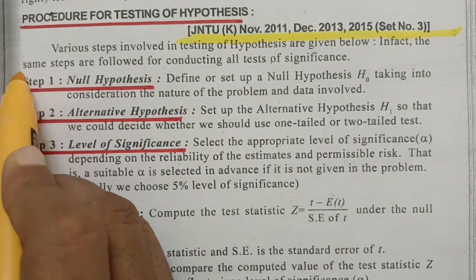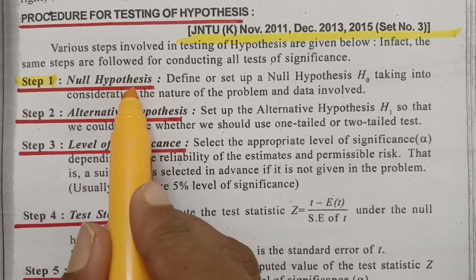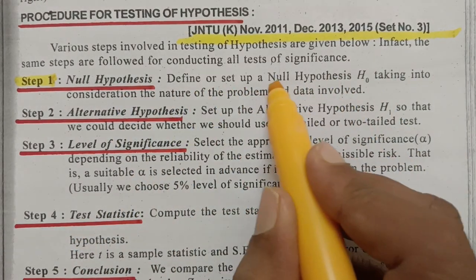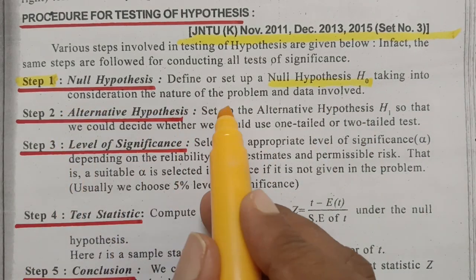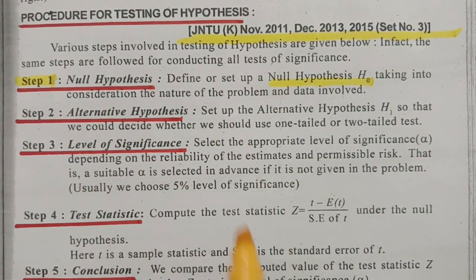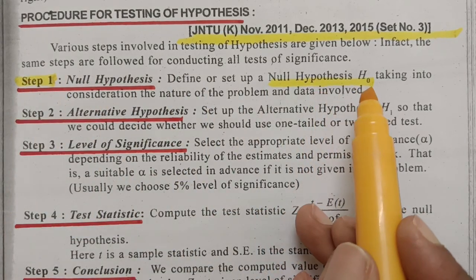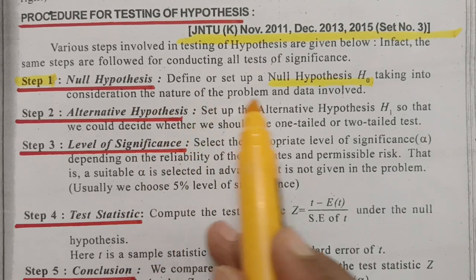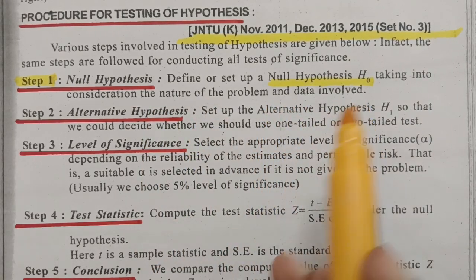Step 1 is the null hypothesis. Define or set up a null hypothesis H0, taking into consideration the nature of the problem and the data involved. The first step is to set up the null hypothesis H0, taking into consideration the nature of the problem and the data involved.